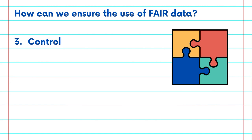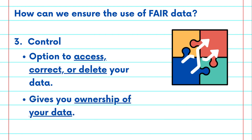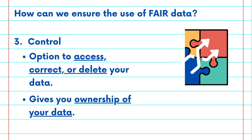And lastly is control. Control is like having the power to rearrange your puzzle pieces. You should be able to access, correct, or delete your data. Organizations should support your right to manage your information. Control gives you the ownership of your own data.